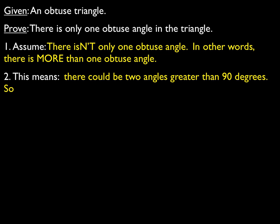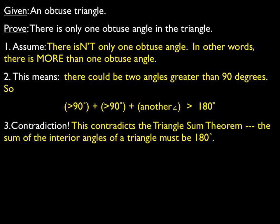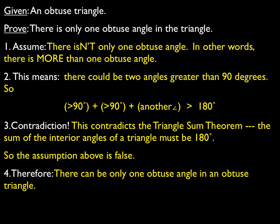This means that we could have two angles greater than 90 degrees. So an angle greater than 90 plus another angle greater than 90 plus any other angle is going to be greater than 180 — and that's the contradiction. This contradicts the Triangle Sum Theorem, which states the sum of the interior angles of a triangle must be 180 degrees. Therefore, our assumption in step one was false. We conclude that there can be only one obtuse angle in an obtuse triangle.